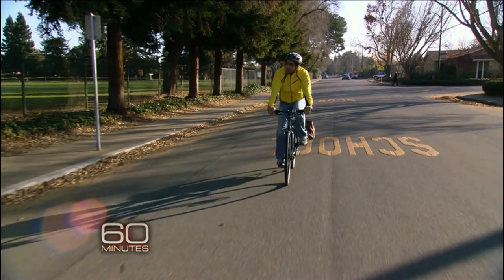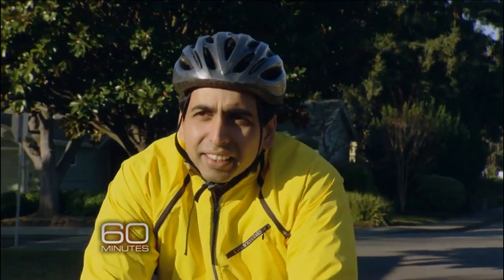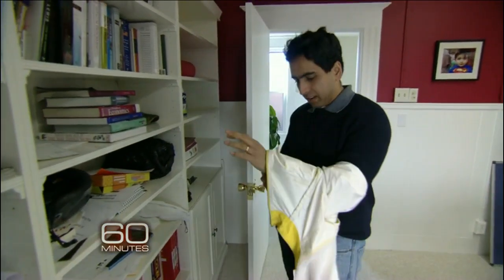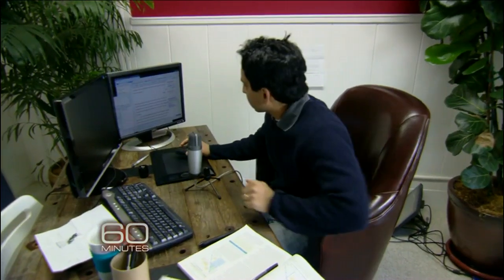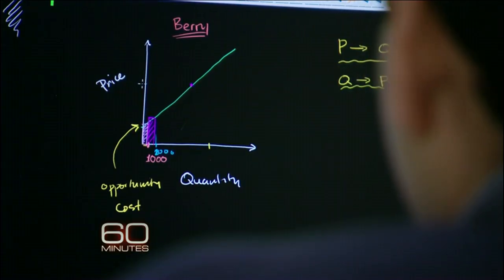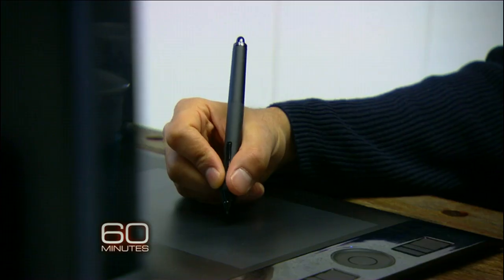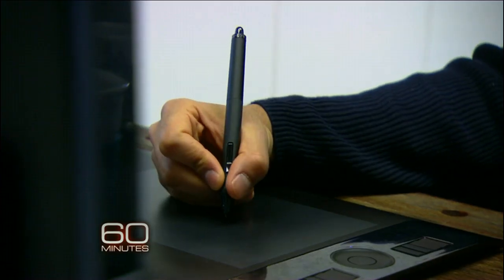35-year-old Sal Khan may look like a bicycle messenger, but with three degrees from MIT and an MBA from Harvard, his errand is intensely intellectual. In his tiny office above a tea shop in Silicon Valley, he settles in to do what he's done thousands of times before. He's recording a 10-minute economics lesson. It's so simple — all you hear is his voice, and all you see is his colorful sketches on a digital blackboard.